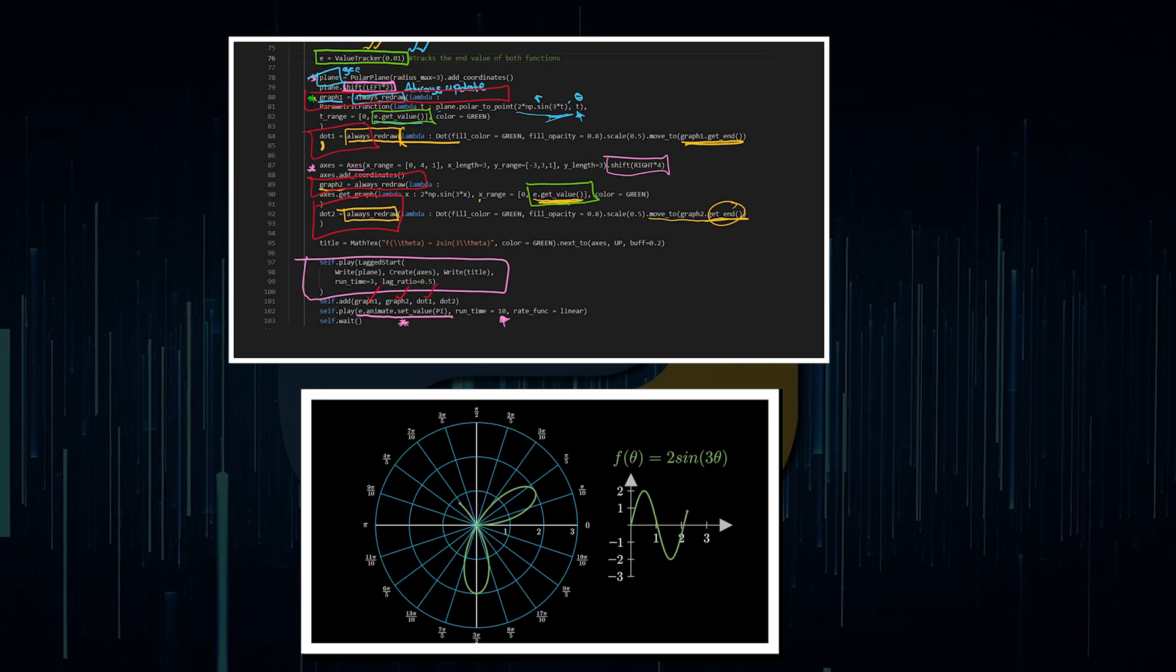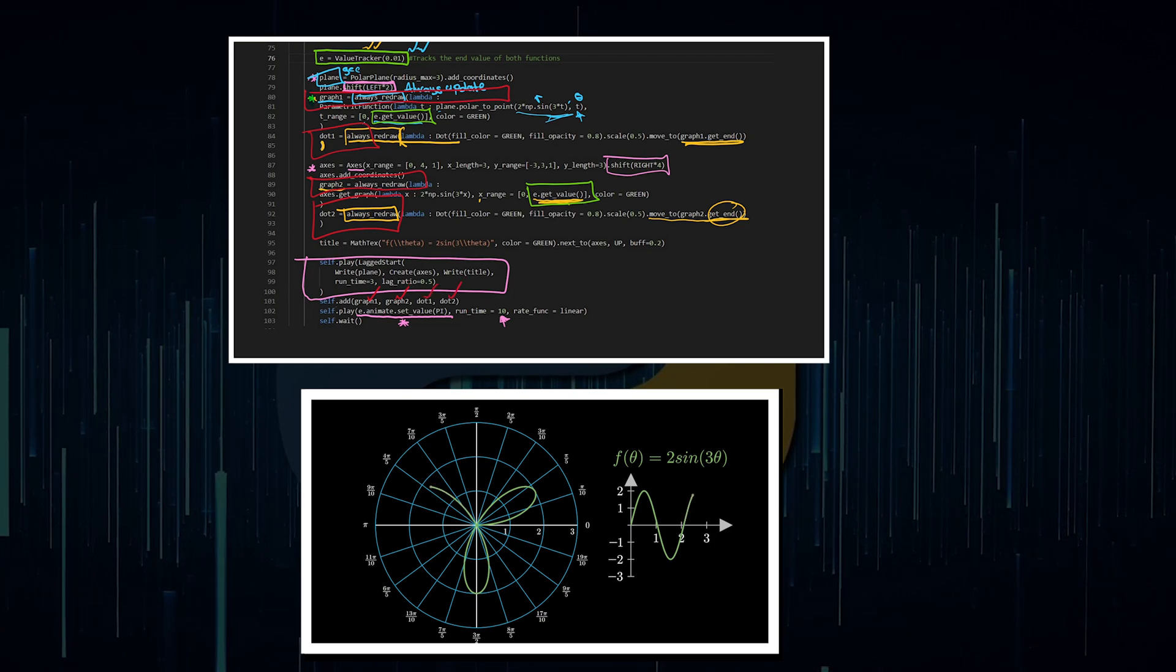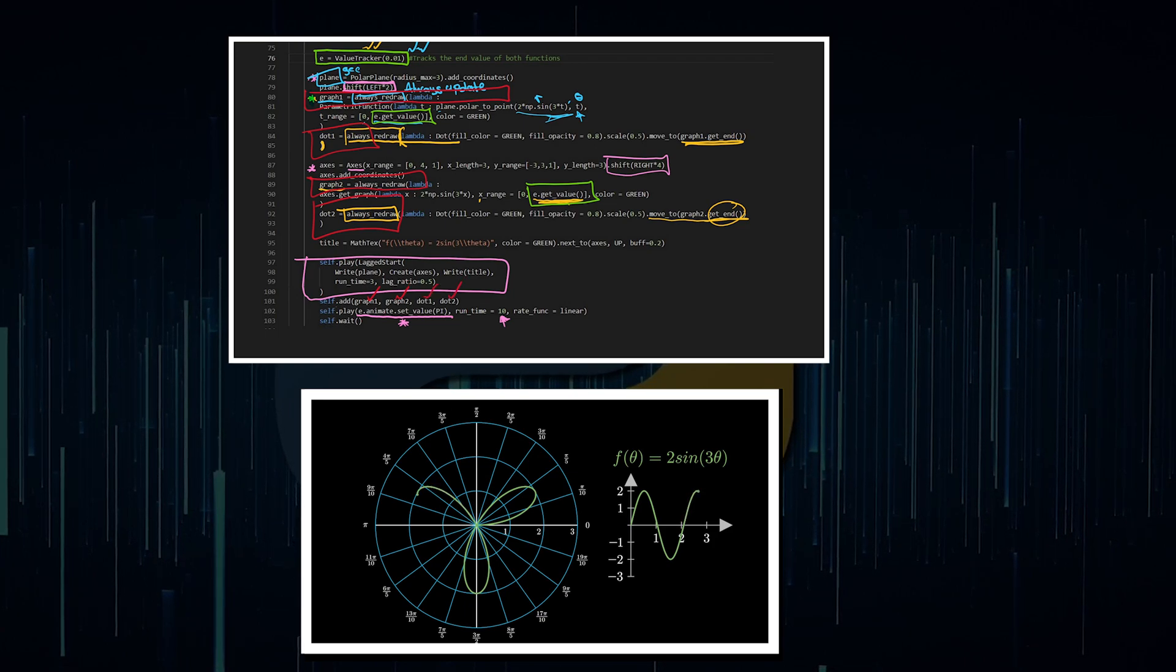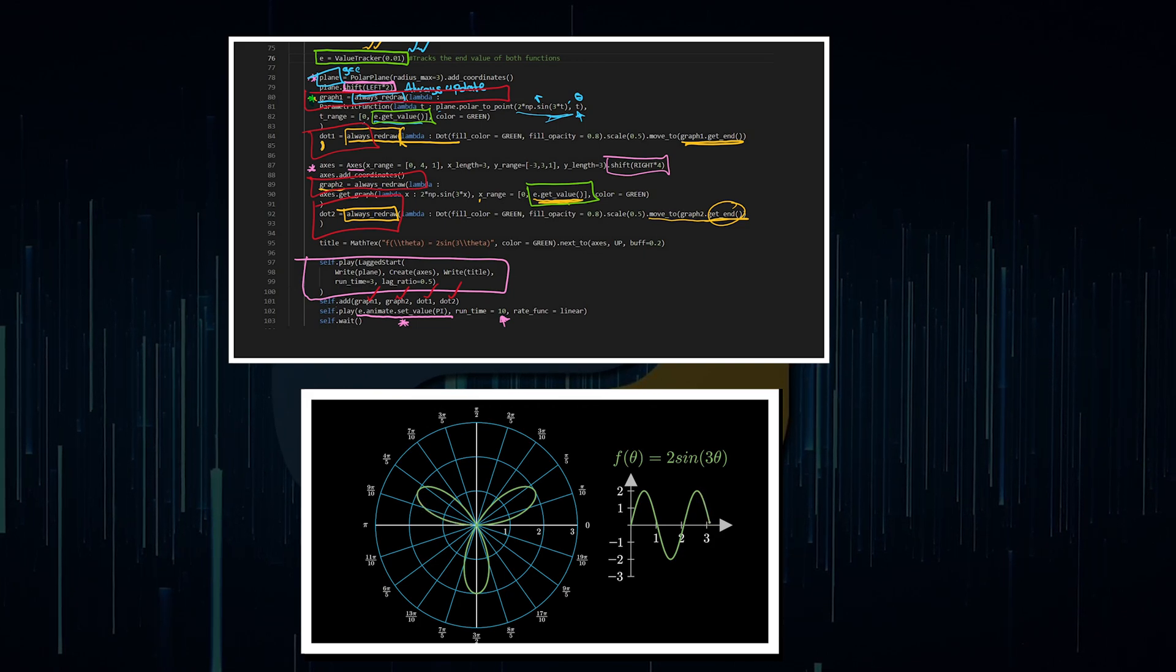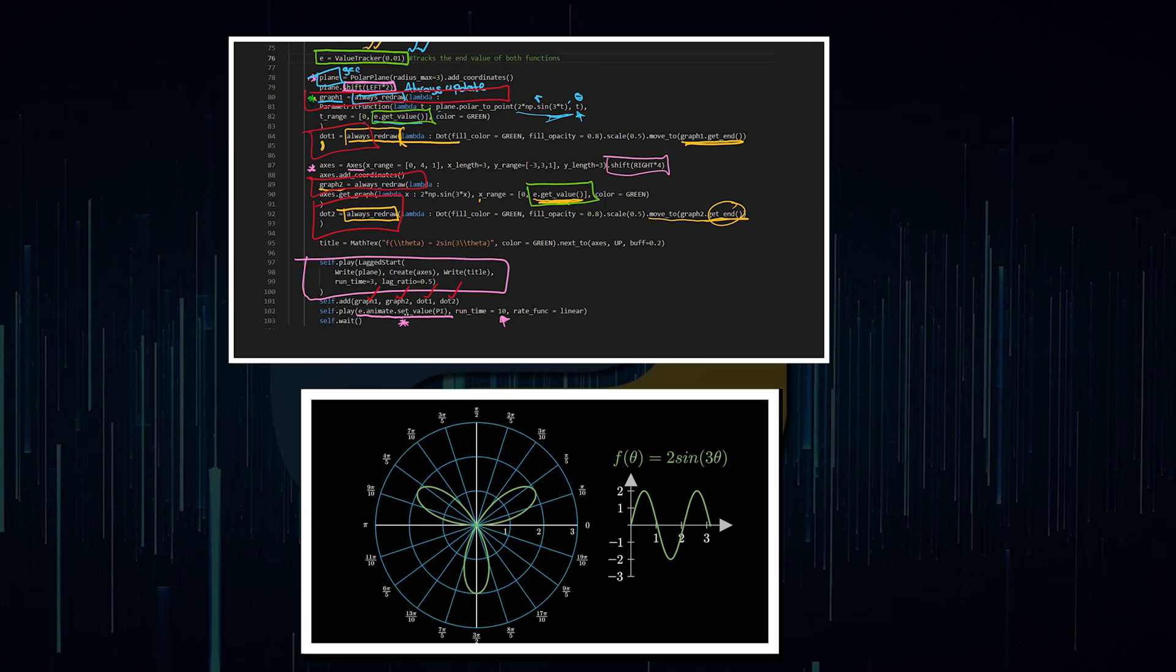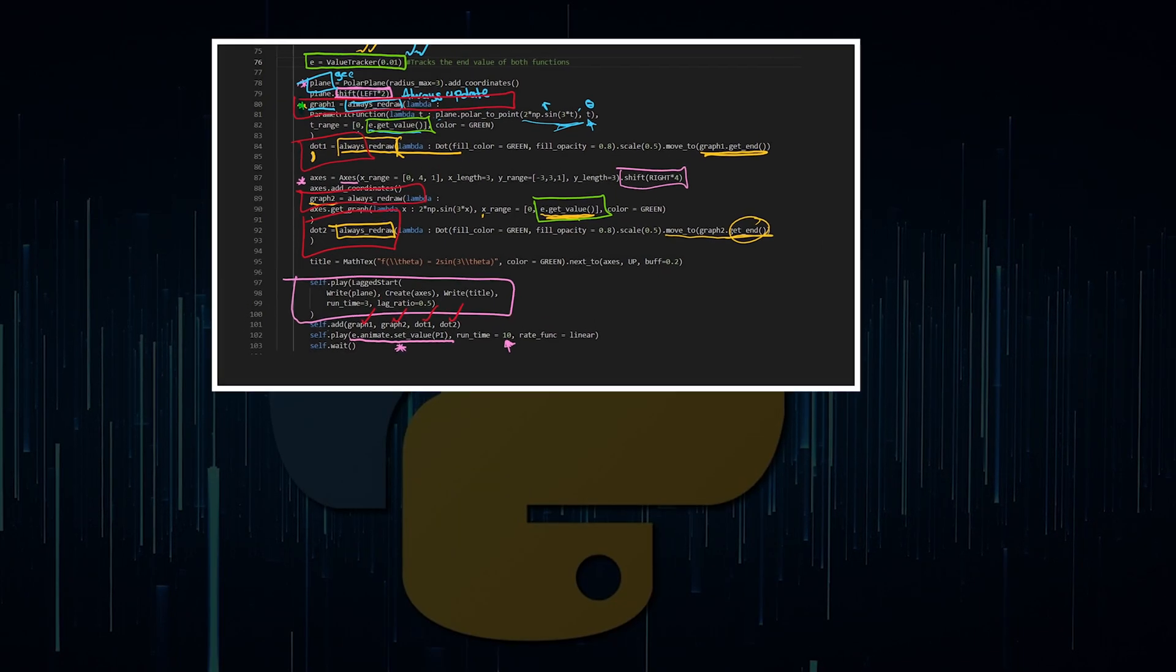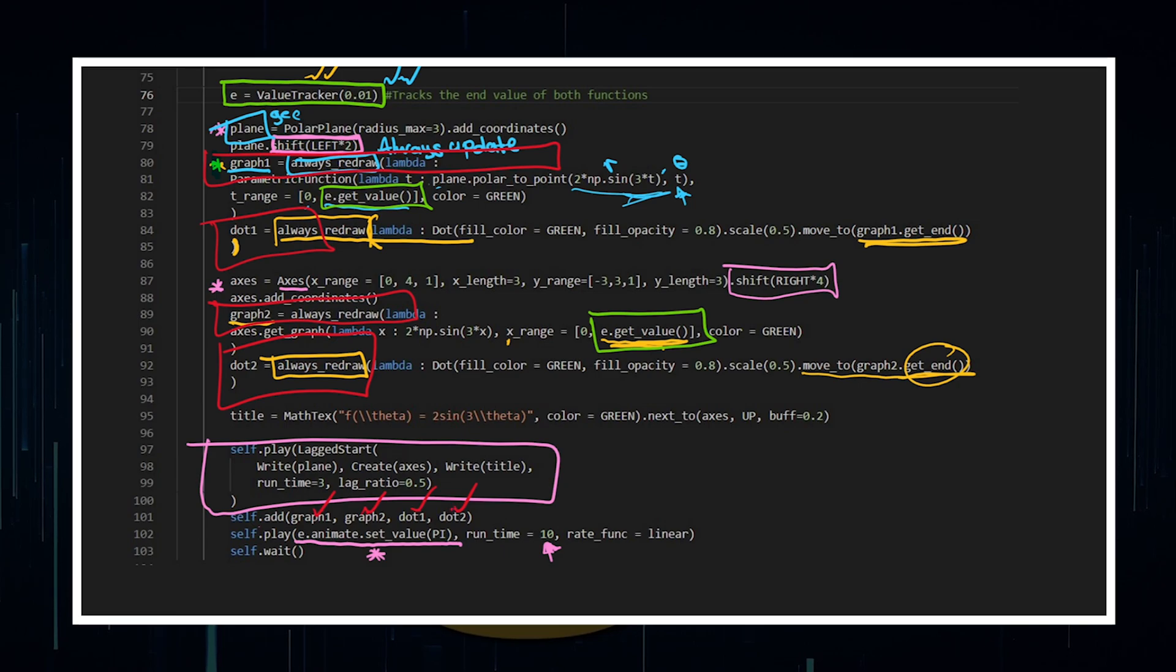One, two, three, four, are all given by updaters. All of those objects there have the always_redraw statement. So when you add them and then play the value tracker out, those objects, one, two, three, four are going to update with respect to this value tracker.